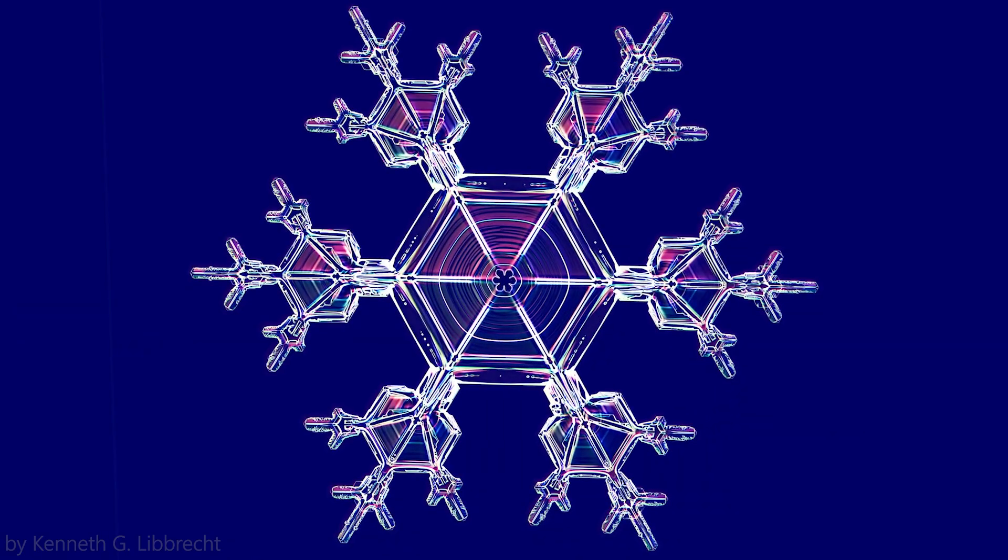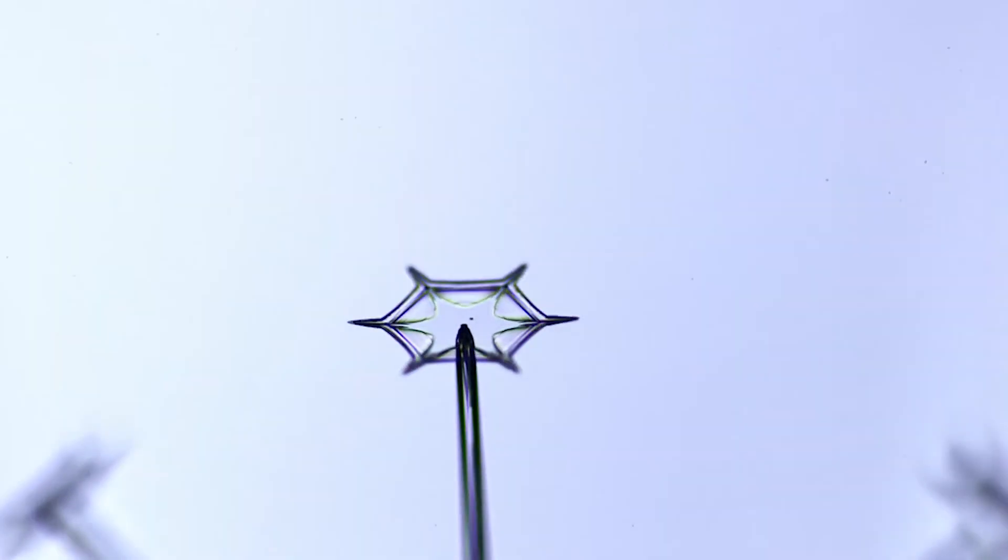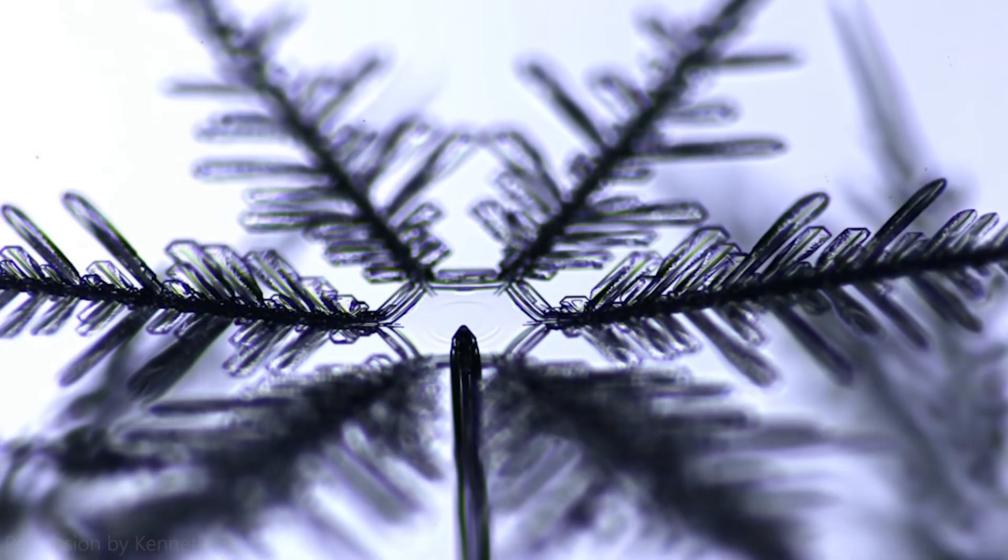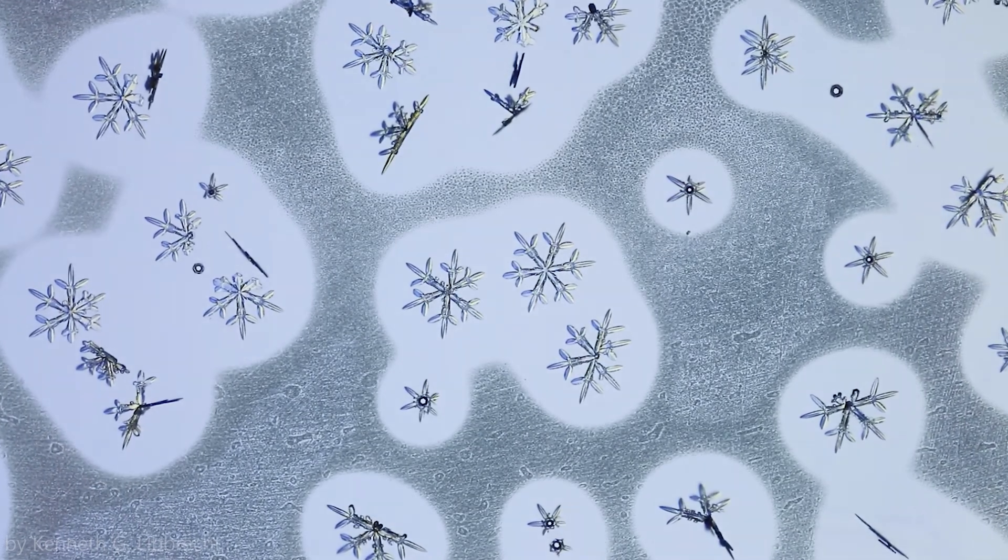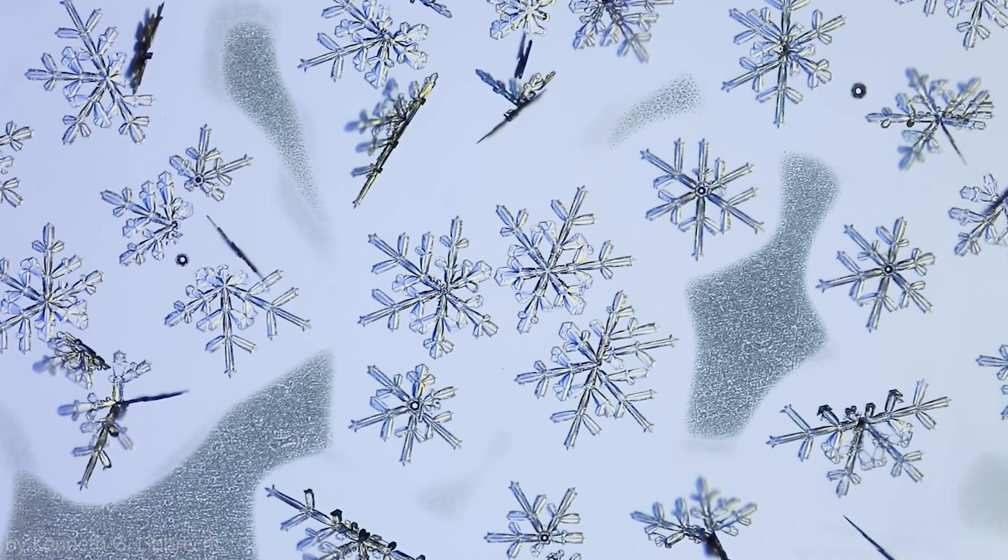The exact shape of the final snow crystal is determined by the precise path it took through the clouds. But the six arms all took the same path, and so each experienced the same changes at the same times. Thus the six arms grow in synchrony, yielding a complex yet symmetrical shape.